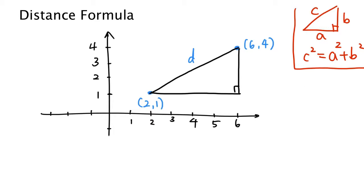Now if you look at the picture, it is quite easy to find the length of the two other sides. The length of this side is in fact the distance between the numbers 2 and 6 on the x-axis, and this distance is 4 units. We can find the length of the other side similarly — that is the distance between 1 and 4 on the y-axis, which is 3 units.